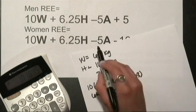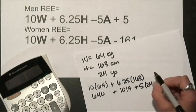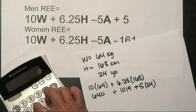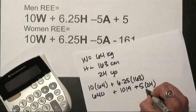Minus 5 times my age, 5 times 24, is 120.